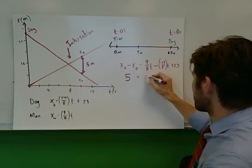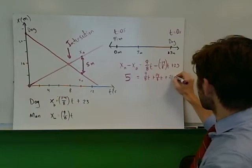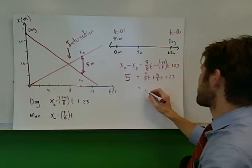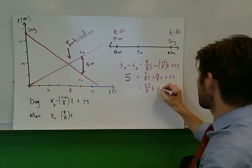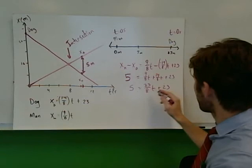X m minus x d is just taking this equation minus this equation. So that's 9 divided by 8 t minus (negative 14 over 8 t plus 23). Feel free to pause and check the algebra. I can do some simplification here: 9 over 8 t, negative times a negative will be positive, plus 14 over 8 t minus 23. These both have a single t and a common denominator, so that's 9 plus 14, which gives us 23 over 8 t minus 23 equals 5.